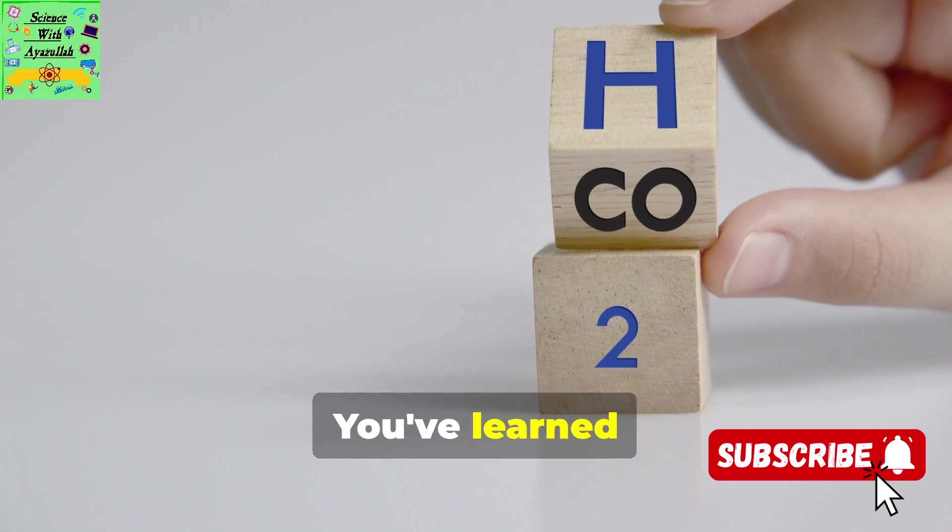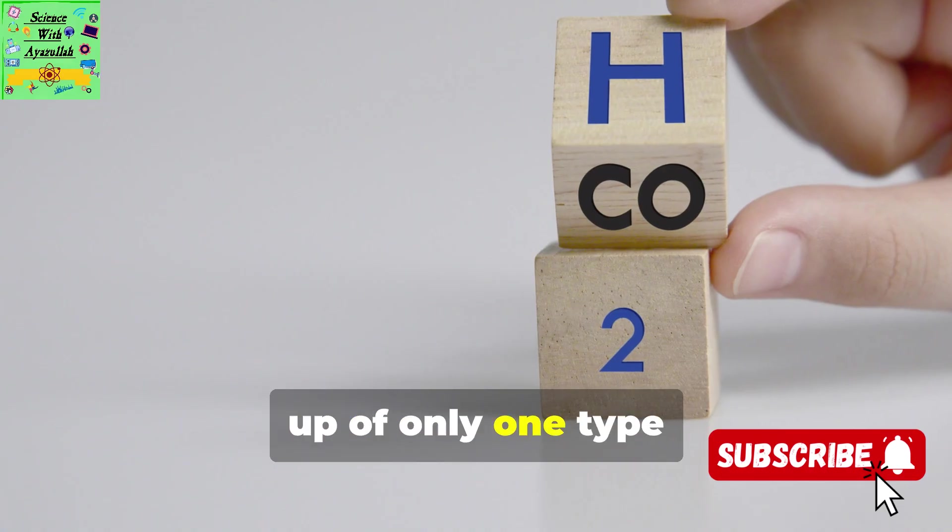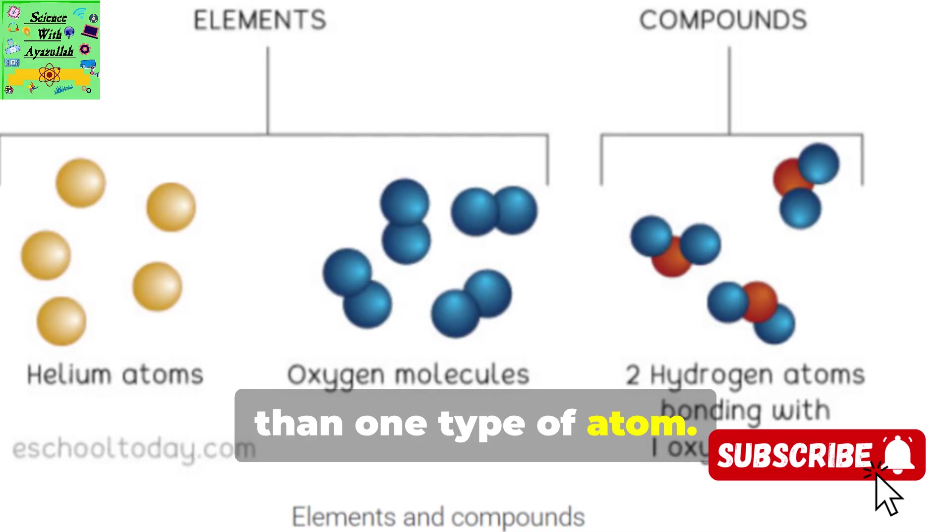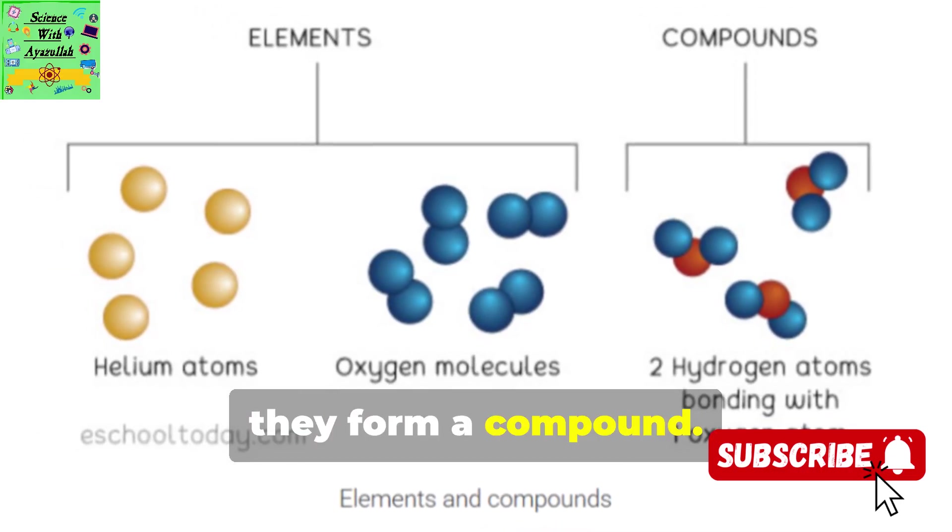What is a compound? You've learned about elements in the periodic table. An element is made up of only one type of atom, but many substances are made of more than one type of atom. When different atoms join tightly together through bonding, they form a compound.